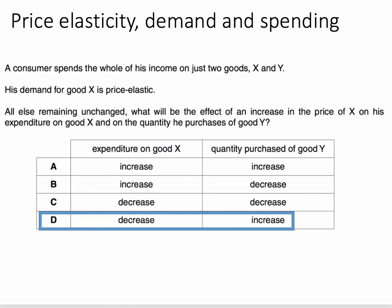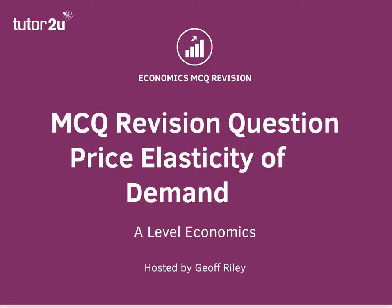And given that the consumer is only buying two goods, X and Y, if X becomes more expensive and all else remains unchanged, this will cause a substitution effect away from X. The consumer will use more of his or her budget to buy more of Good Y. That's why that's the answer to this question.